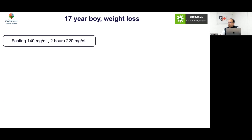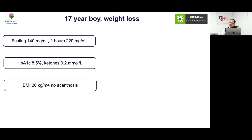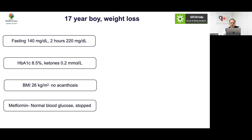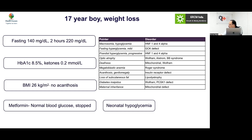Case: A 17-year-old slightly overweight boy with weight loss, blood sugars ranging from 140 to 220, high HbA1c, non-ketotic, no acanthosis. Metformin resulted in normal blood glucose and was eventually stopped. There was also a history of neonatal hypoglycemia, suggesting a milder form of a genetic defect.